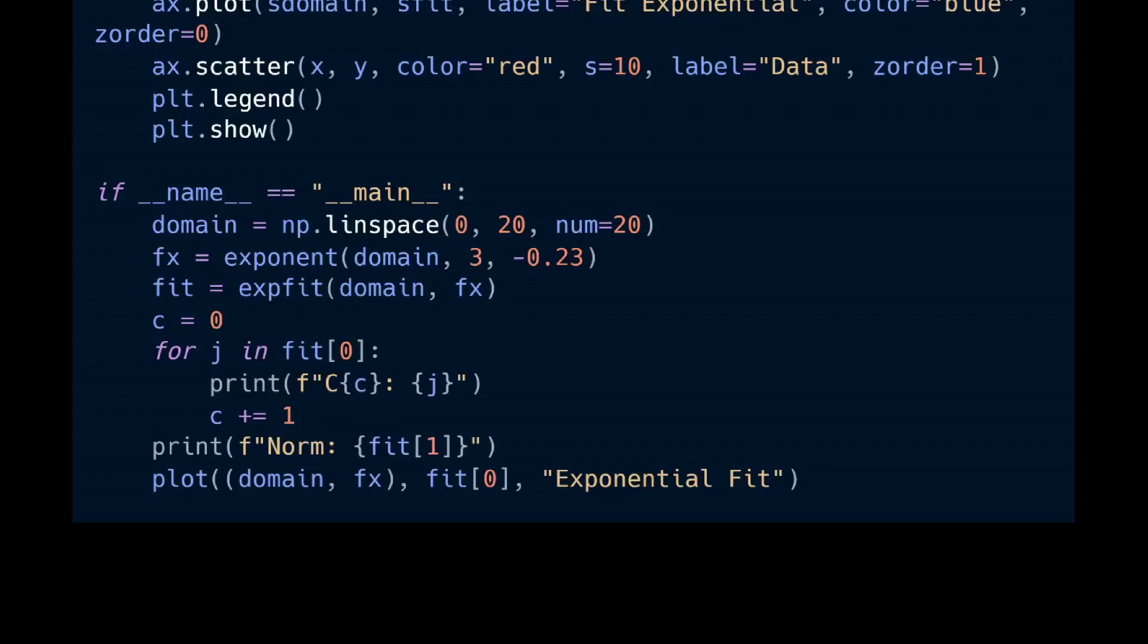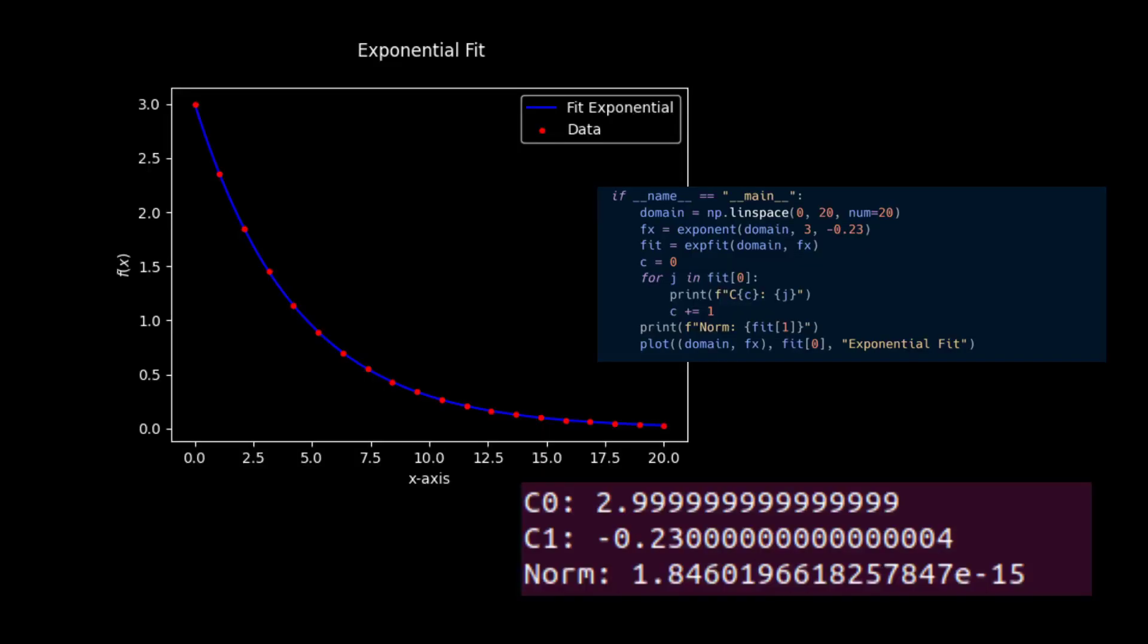Then we're calling our exponential fitting function passing in our domain, our x data, and our generated exponential data. We're printing out all of our coefficients to the terminal, we're also printing out our norm, and then we're plotting everything. This is the result that we end up getting. Just visually looking at our exponential fit, it looks pretty much perfect as we would have expected.